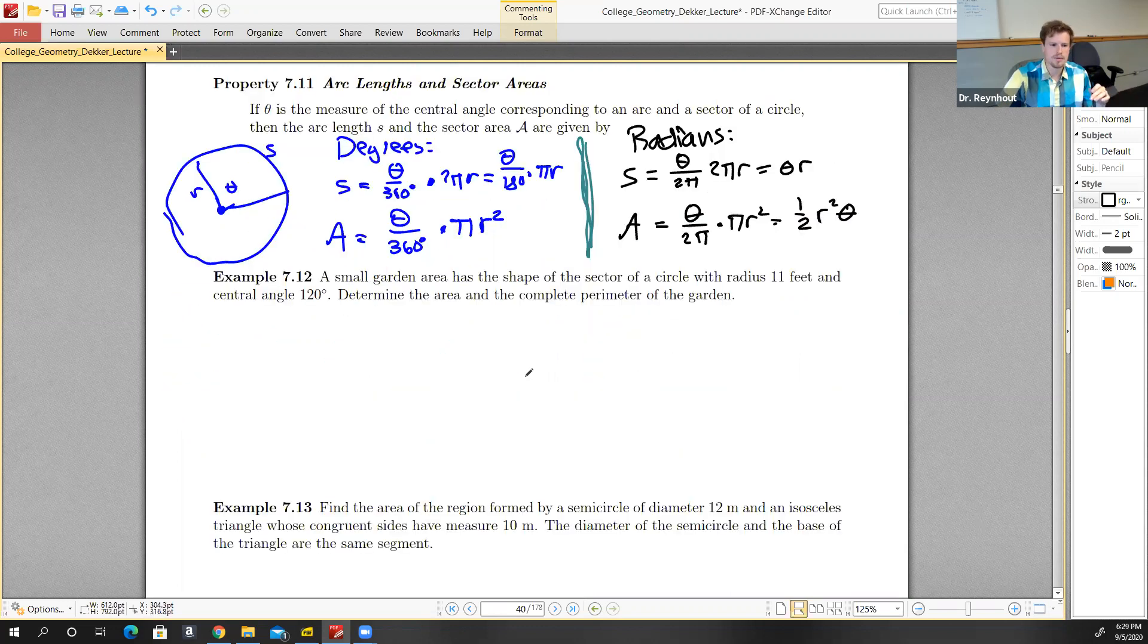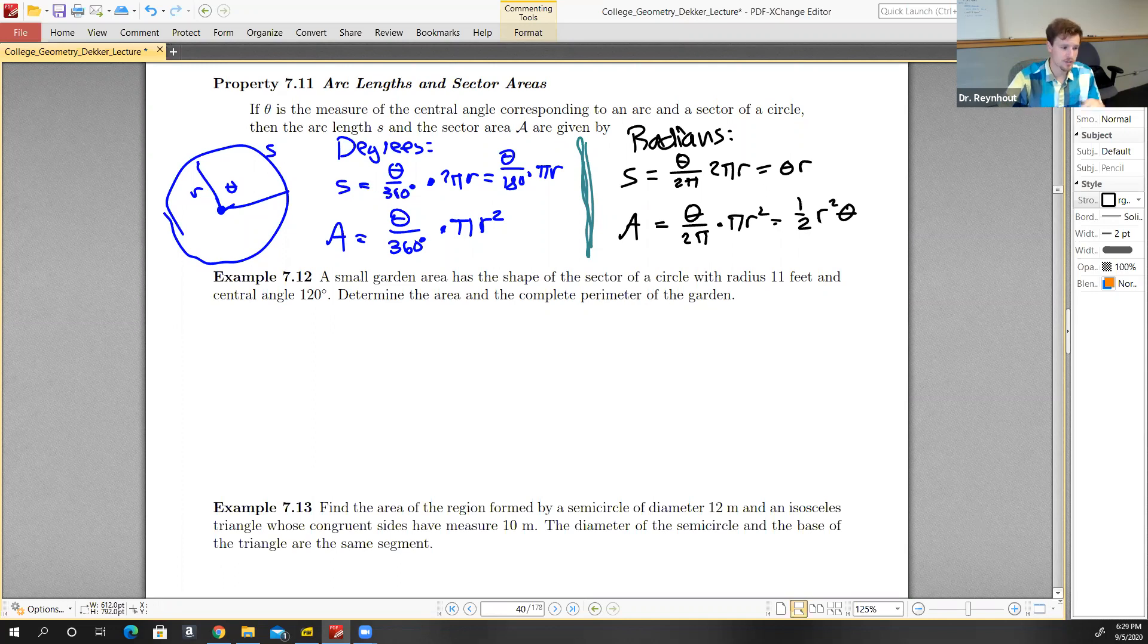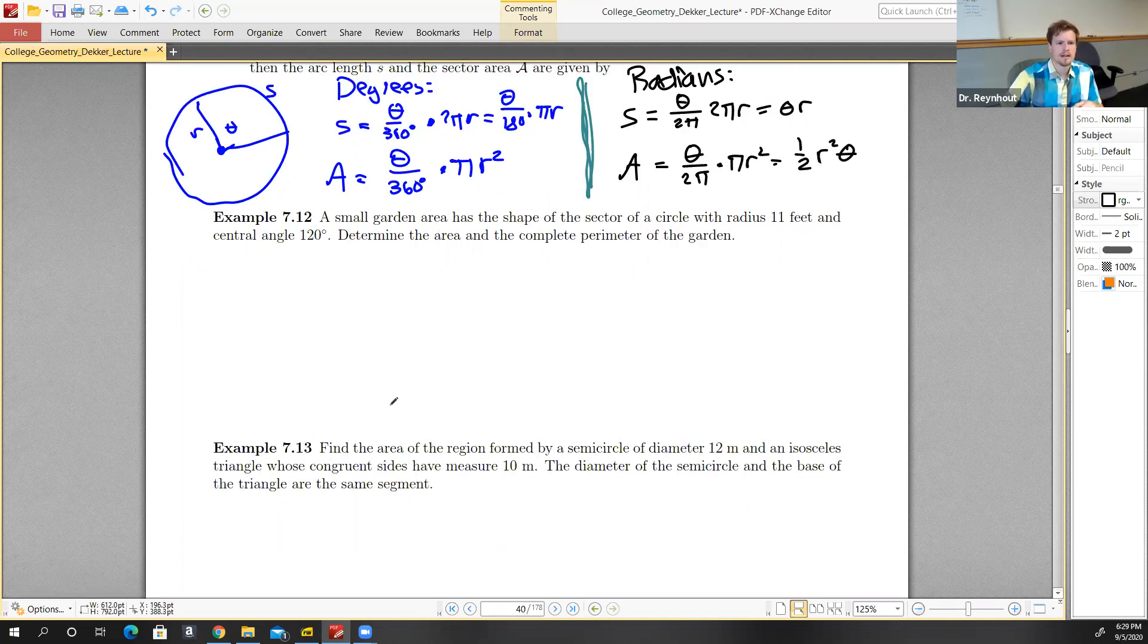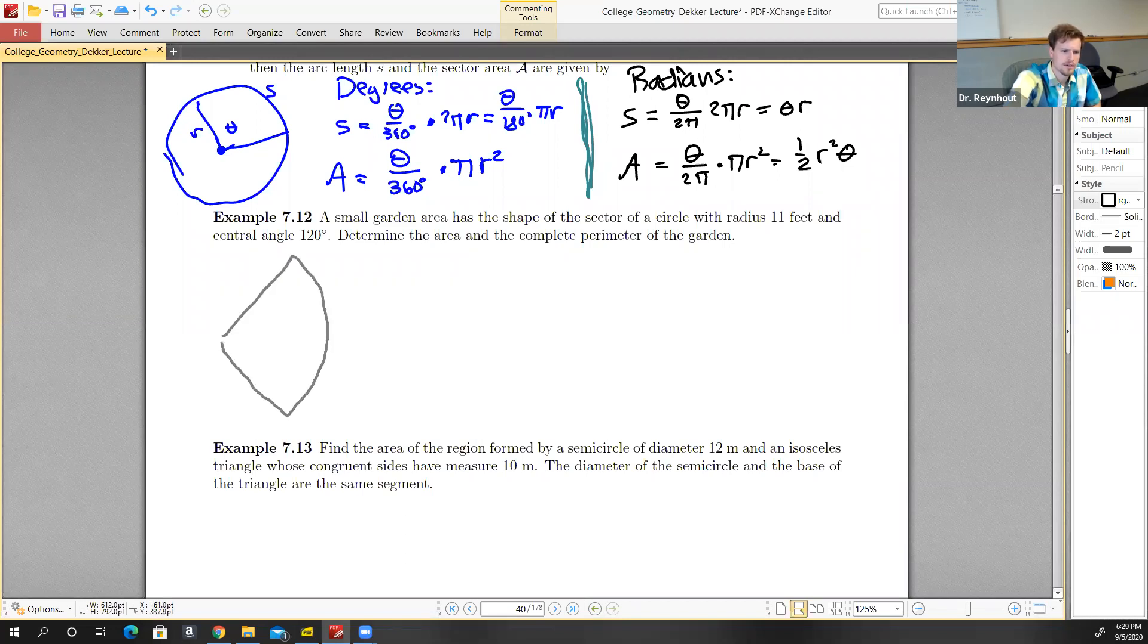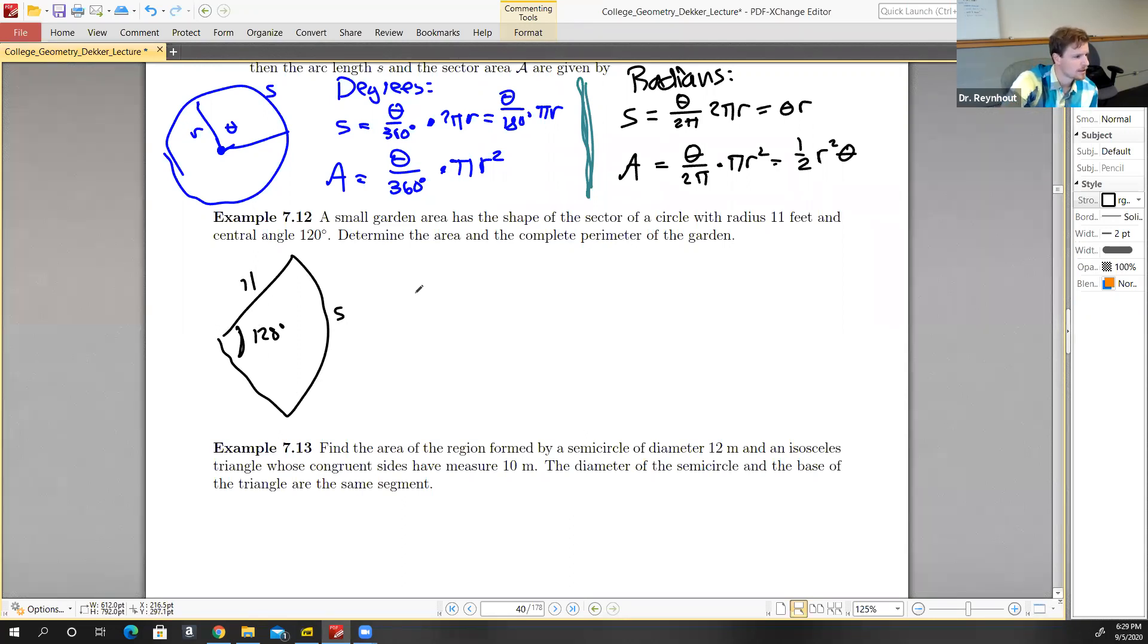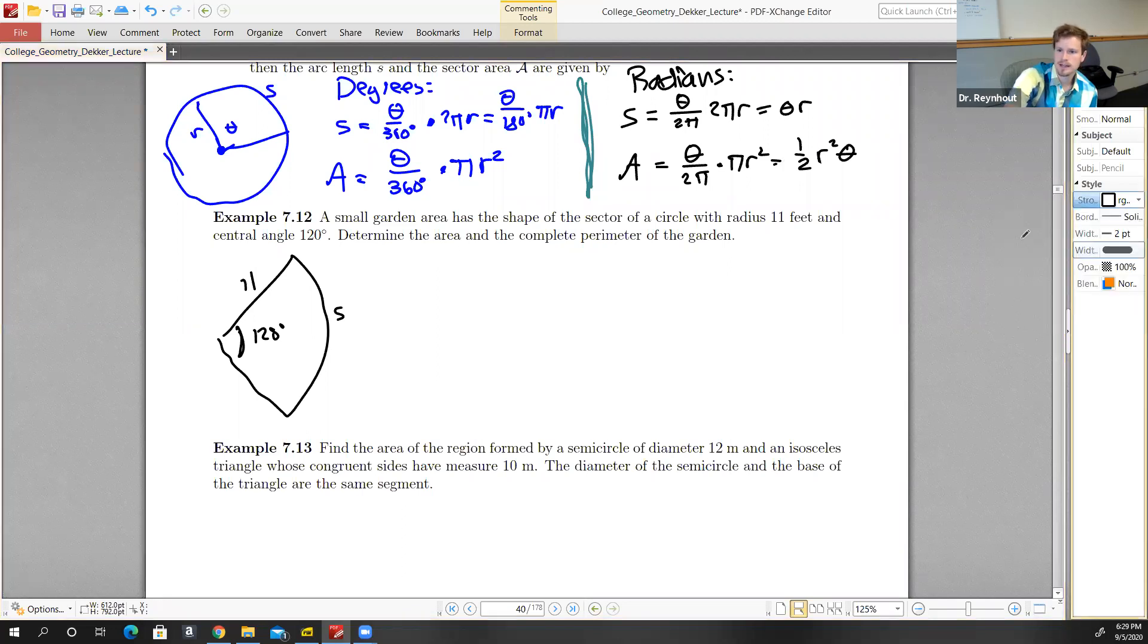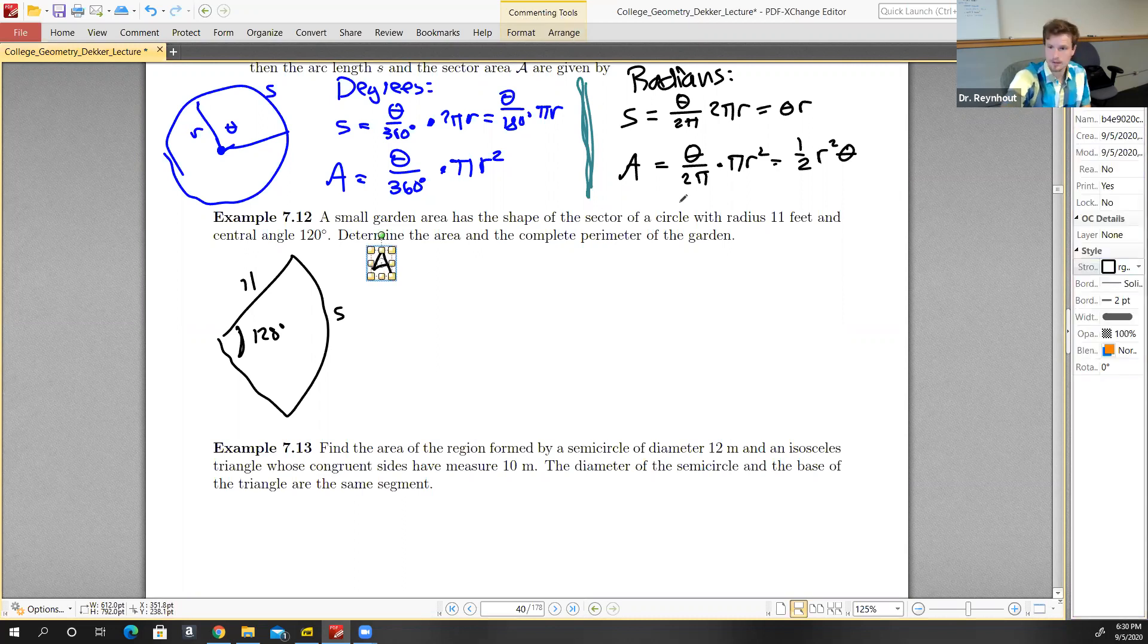Let's take a look at a few examples. A small garden area has the shape of a sector of a circle with radius 11 feet and central angle 120 degrees. We want to determine the area and the complete perimeter of the garden.